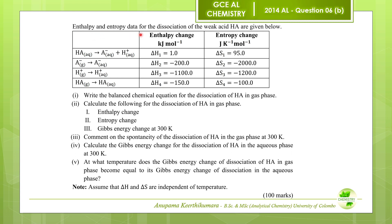Enthalpy and entropy data for the dissociation of the weak acid HA are given. The first reaction: aqueous HA dissociates into aqueous A minus ion and aqueous H plus ion. The second equation: gaseous A minus converted to aqueous A minus. Third: gaseous H plus converted to aqueous H plus. Last: gaseous HA converted to aqueous HA. Enthalpy change and entropy change of these four reactions are given.